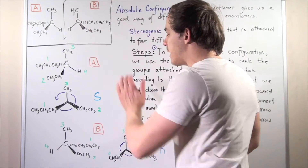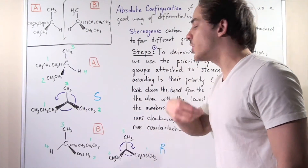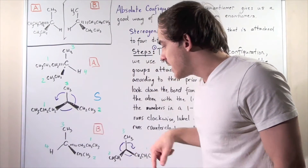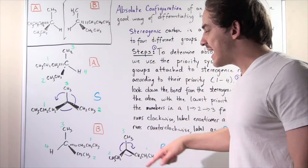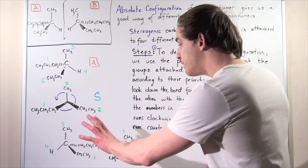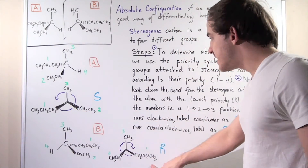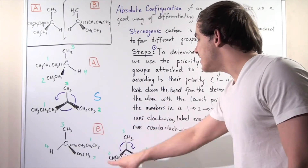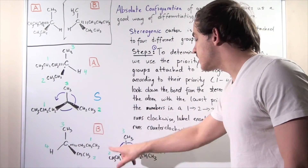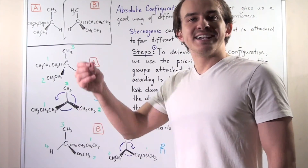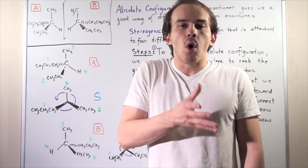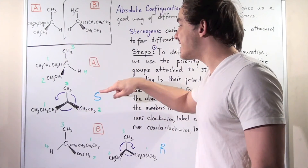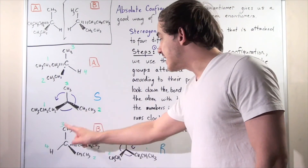Likewise, for enantiomer B we follow the same exact steps. We prioritize our groups: H gets four, it has the lowest atomic number; methyl gets three, ethyl gets two, and propyl gets one. Again, we look down this bond. Flipping it, the two goes here, the one goes here, and the three goes on top. We draw our arrow from one to two to three, and we see that it goes in a clockwise direction. So we label this enantiomer as R. Generally speaking, whenever one enantiomer is S, the other is automatically R, and vice versa. Since compound A was S, we could have automatically assumed that enantiomer B must be R.